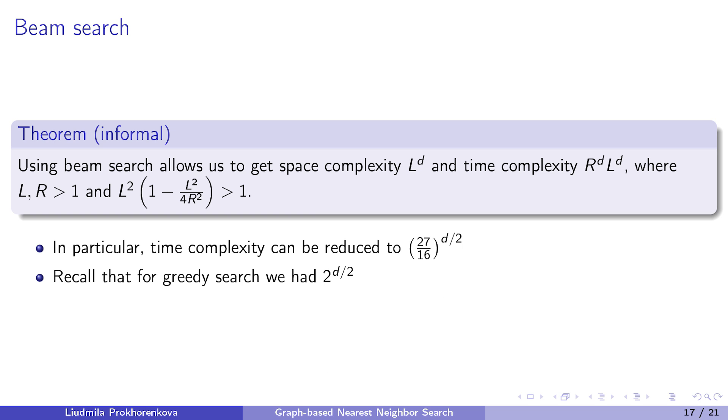Now, let me explain the effect of the beam search. For uniform datasets, beam search allows us to reduce both time and space complexity. In this theorem, the constant L defines the number of neighbors in the graph, and the constant R defines the number of candidates maintained during the beam search.